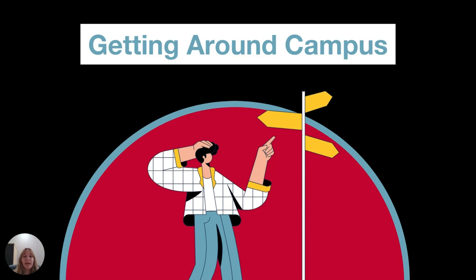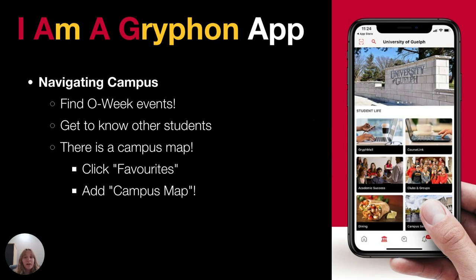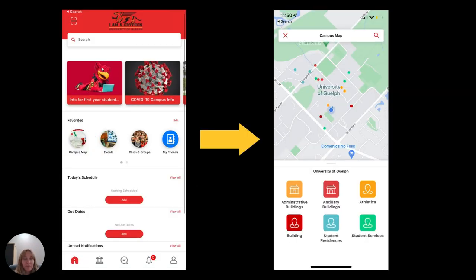Let's get started with wayfinding. First, we'll cover how to actually get around campus so you know where you're going when you arrive. Many of you might have already downloaded the I Am A Griffin app, or the IAAG app for short. If you haven't downloaded it already, I would suggest you do it now. It's a great app to have, especially for O-Week, because you'll be able to find all the O-Week events on your phone while on the go. It's also a great way to get to know other students. A helpful feature on the app is the campus map, which can help you learn how to get around campus, find where events are this week, and where your classes are starting Thursday.